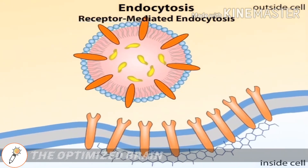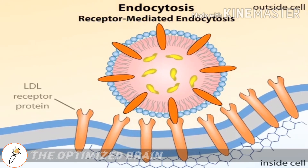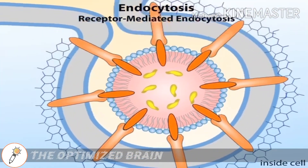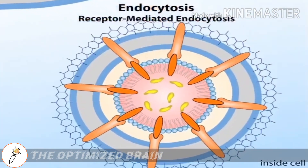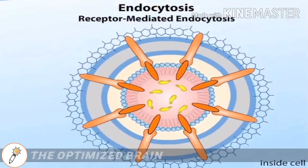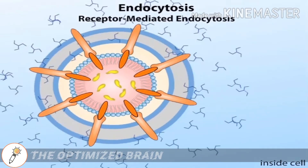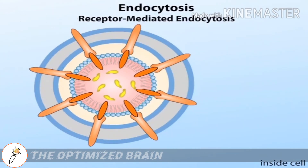The pit is reinforced by a lattice-like network of proteins called clathrin. Additional clathrin molecules then add to the lattice, which eventually pinches off a part of the membrane with the attached LDL particle inside. Inside the cell, the vesicle soon becomes uncoated as the clathrin molecules dissociate from the vesicle and from each other.